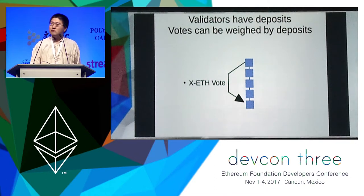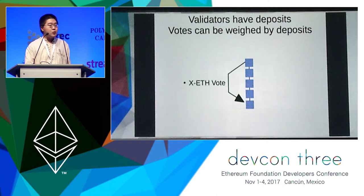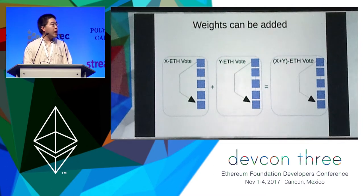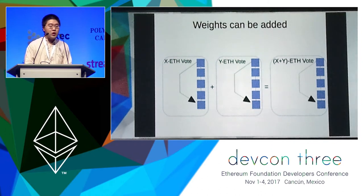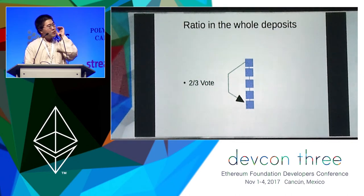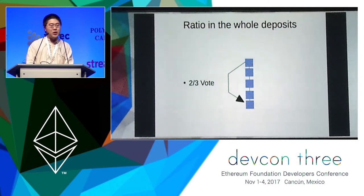After talking about slashing, we can forget about individual validators. We can measure the weight of votes by the amount of deposits backing up the vote. We can say X is a backed vote, and we can add voting messages by the amount of ETH backing up the claims — so X plus Y is a vote. In the protocol, a two-thirds vote plays an important role: this means two-thirds of the total deposit made by all validators backs up the claim of a given vote.